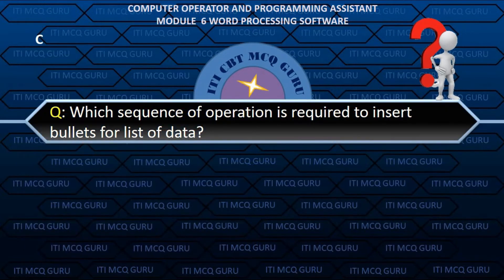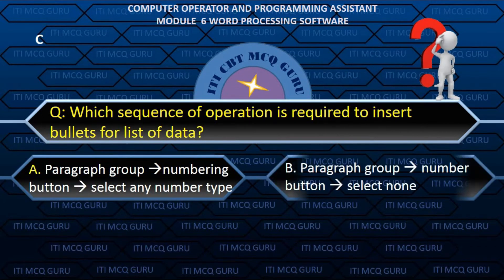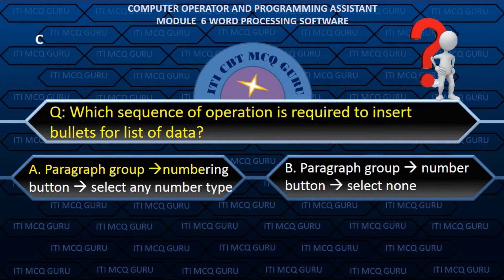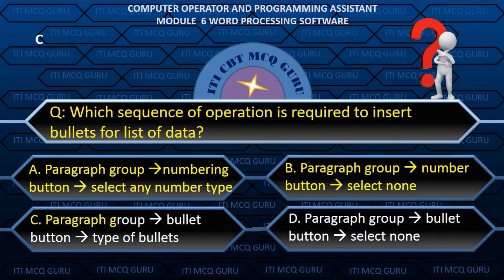Which sequence of operations is required to insert bullets for a list of data? C. Paragraph group, Bullet button, type of bullets.